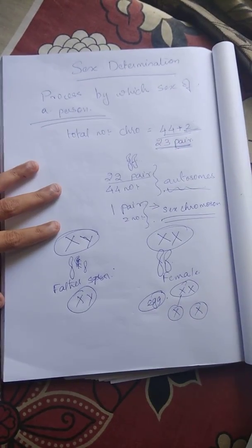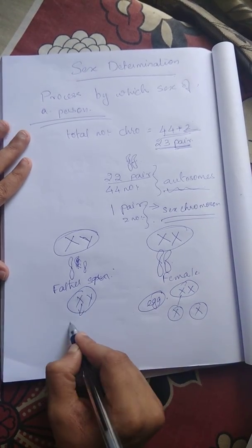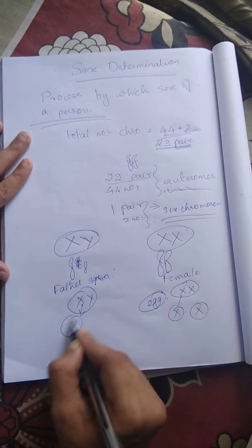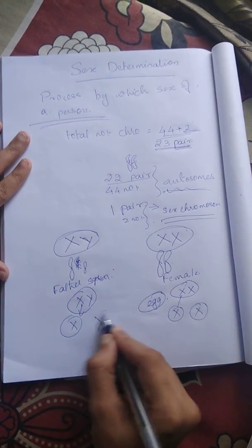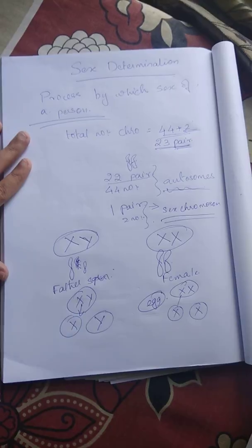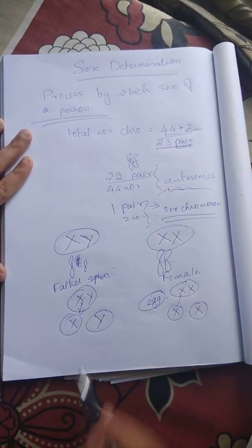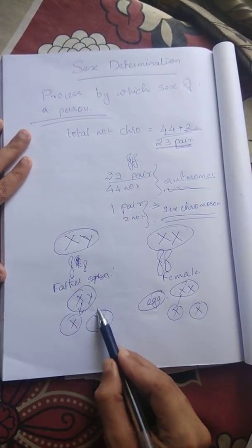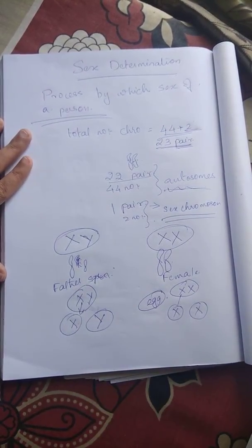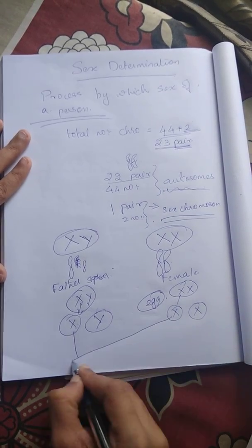The father's sperm carries either X or Y chromosome. One sperm carries X, and the other carries Y. Now, X from sperm combined with X from egg gives a daughter.